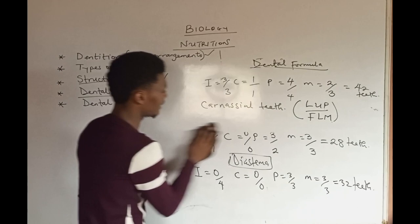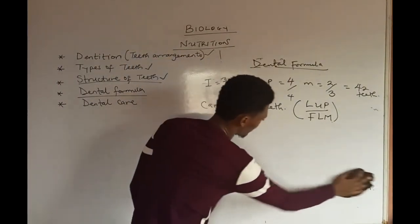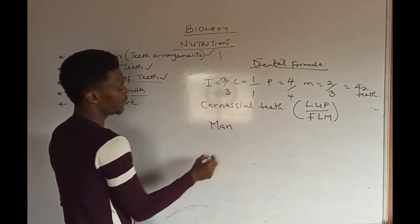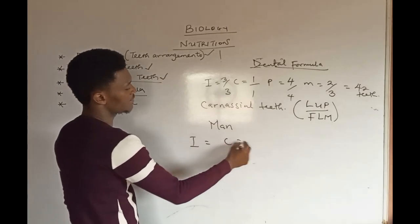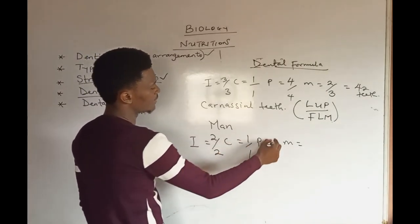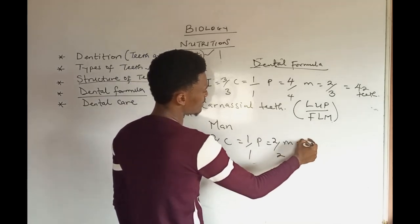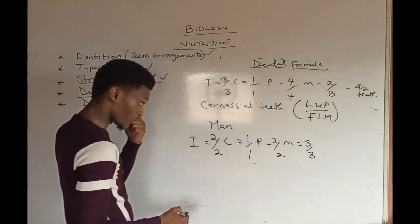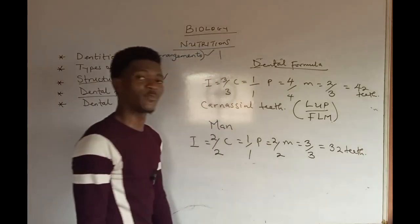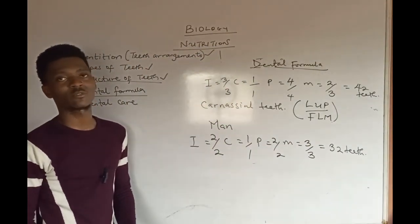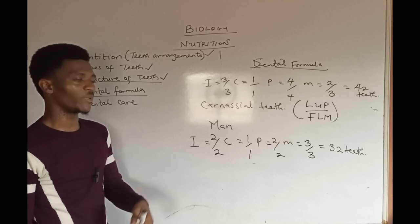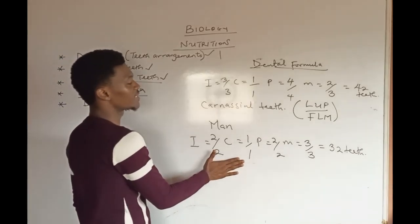The next is the dental formula of man. For man: incisors are 2 over 2, canines are 1 over 1, premolars are 2 over 2, and molars are 3 over 3. When you sum up everything it gives 16, and times 2 gives 32 teeth in an adult human. This represents the permanent teeth.